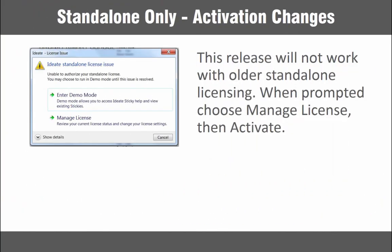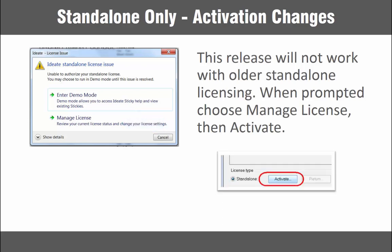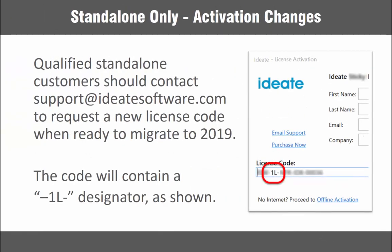For standalone licensed customers, this simplified process does require a new license code. After installing the new release for any of the versions 2016 through 2019, you may be prompted to manage your existing license. When this happens, choose the Manage License option as shown, then the Activate button to input your new license code. This process is not required for network customers. Qualified standalone customers should contact support at ID8software.com to request a new license code when ready to migrate to Revit 2019. The new code will contain a hyphen with a 1L as shown here.